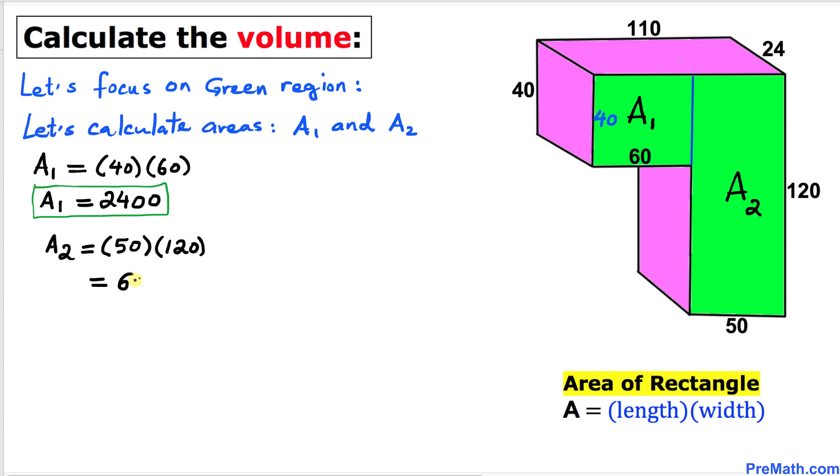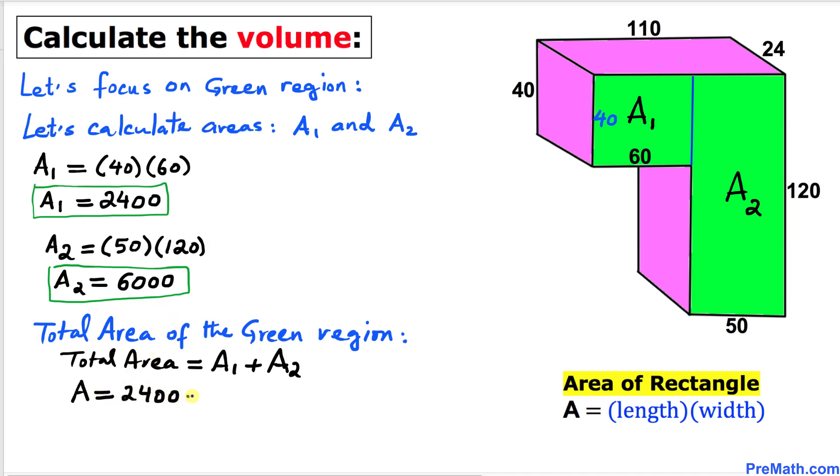Now we are going to calculate the total area of this green region. The total area is going to be A1 plus A2, the individual areas. So the total area A is going to be A1, in our case 2400, plus 6000. That means our total area A turns out to be...